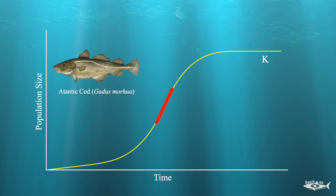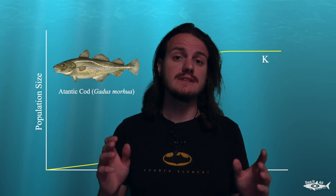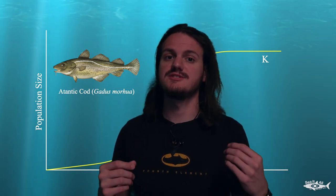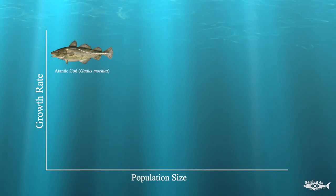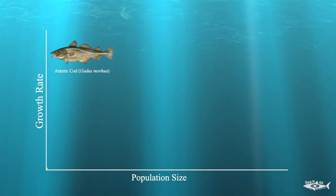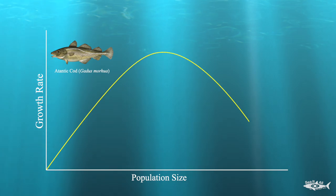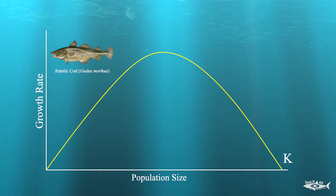Remember your derivatives from calculus class? Don't worry, I didn't trick you into watching a math video. Derivatives are simply useful to plot the slope of a curve. To plot the growth rate as it changes with the population, we're basically going to take the derivative, or the slope, of the population size over time. At first it will be low, but it will rapidly increase, reaching its peak at that critical middle area, before decreasing again until it reaches carrying capacity. So now we have this nice parabola curve that shows different growth rates of our cod population at different population sizes.